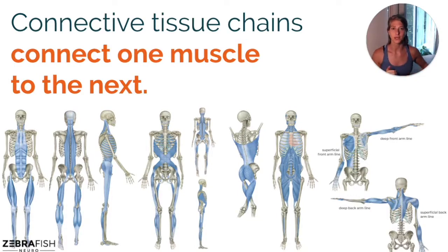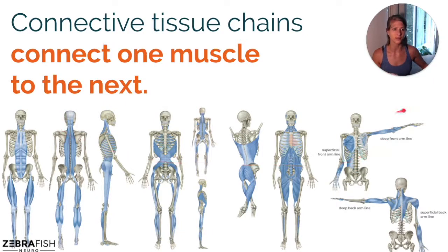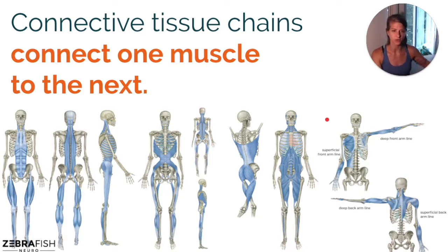Thomas Myers popularized this idea through his book, Anatomy Trains. These are his illustrations right here — there are six shown here, but seven fascial trains that he proposed, plus some chains in the arms and upper extremities. Fascial chains connect one muscle to the next and all the way through the body — they're patterns that go all the way down and up.